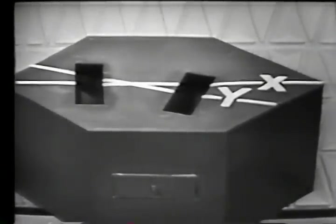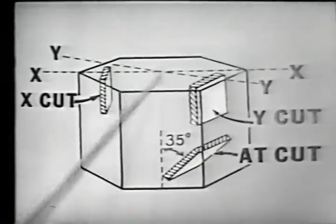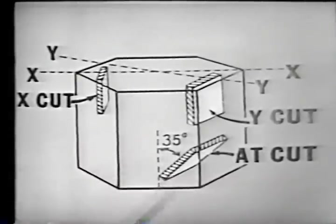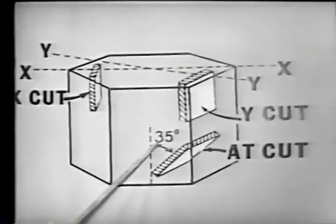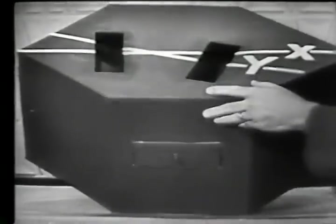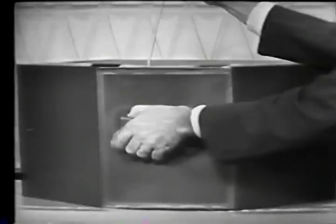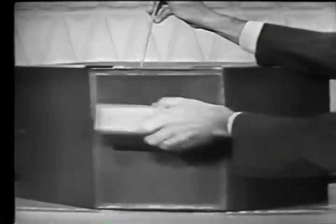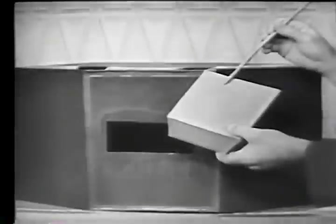For the third and final cut, we're going to cut at an angle from the Z-axis. Recall the Z-axis passes through the center of the crystal from end to end. For this cut, we'll cut at a 35 degree angle from the Z-axis. The crystal cut is made right into the face of the crystal. We call this cut an AT cut — an AT cut crystal.